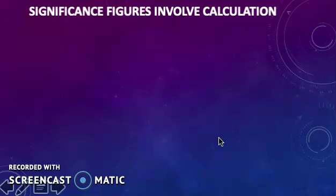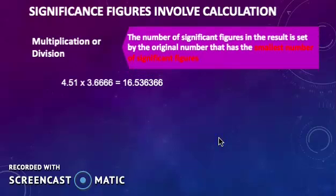In multiplication and division, the number of significant figures in the result is set by the original number that has the smallest number of significant figures. For example, the result of 4.51 times 3.6666 has to be rounded off to 3 significant figures, which is 16.5.